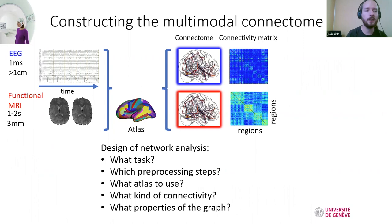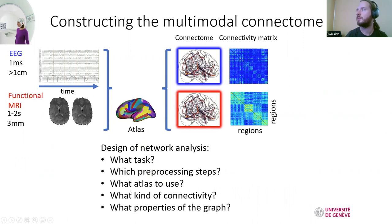Today, I'm going to focus only on EEG and fMRI. The questions I want to address are: what kind of tasks can I use, what kind of preprocessing do we need—I will focus only on fMRI since we covered EEG yesterday—then I'll talk a little about atlases, and give a rough overview of connectivities and basic properties of the graph.